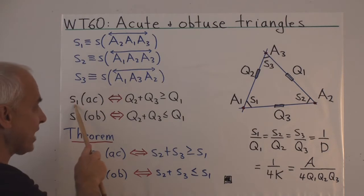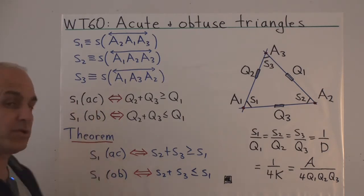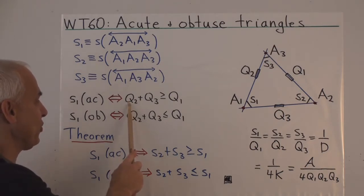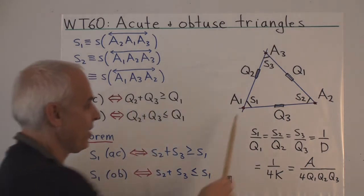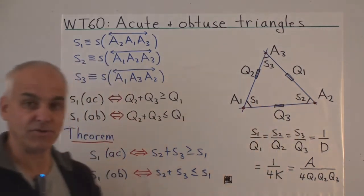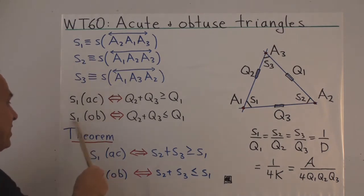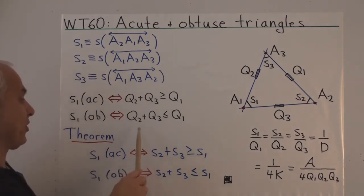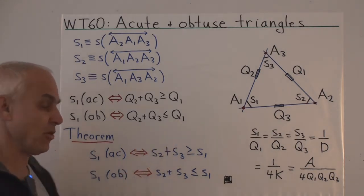We say that such a sector's spread S1 is acute precisely when this inequality holds: Q2 plus Q3 is bigger than or equal to Q1. And conversely, we say that the spread S1 of the sector is obtuse when the opposite inequality holds — when Q2 plus Q3 is less than or equal to Q1.